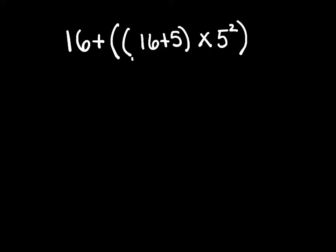So we're going to do everything in the parentheses first. So this set of parentheses here has 16 plus 5. 16 plus 5 is 21. Then we also have an outer set of parentheses, which includes that 21 times the 5 raised to the 2 power.